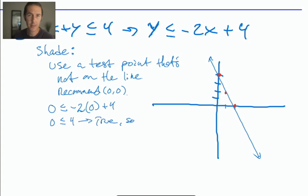If this test point had tested false, I would be shading above the line because my test point is below the line, but it tested false. So I will shade the other side. True. So shade region, including the test point.